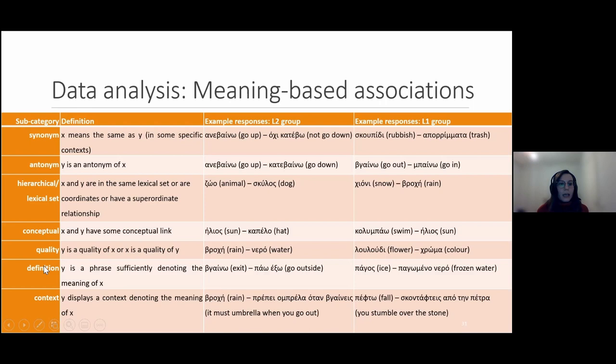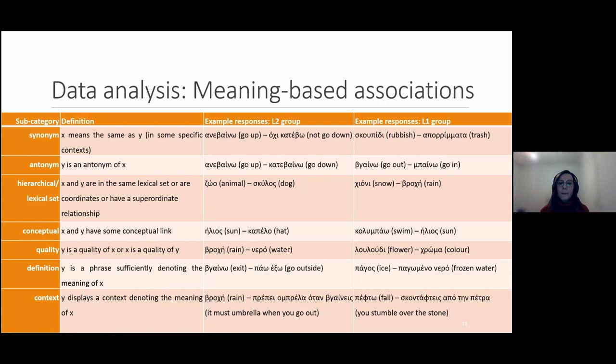We also had definition — Y is a phrase sufficiently denoting the meaning of X — for example, stimulus 'ice,' response 'frozen water.' And context — the response is a context that denotes the meaning of X. For example, for the stimulus 'rain,' an L2 child said something like 'you must take umbrella when you go out,' giving a context where we understand the meaning of the stimulus word.